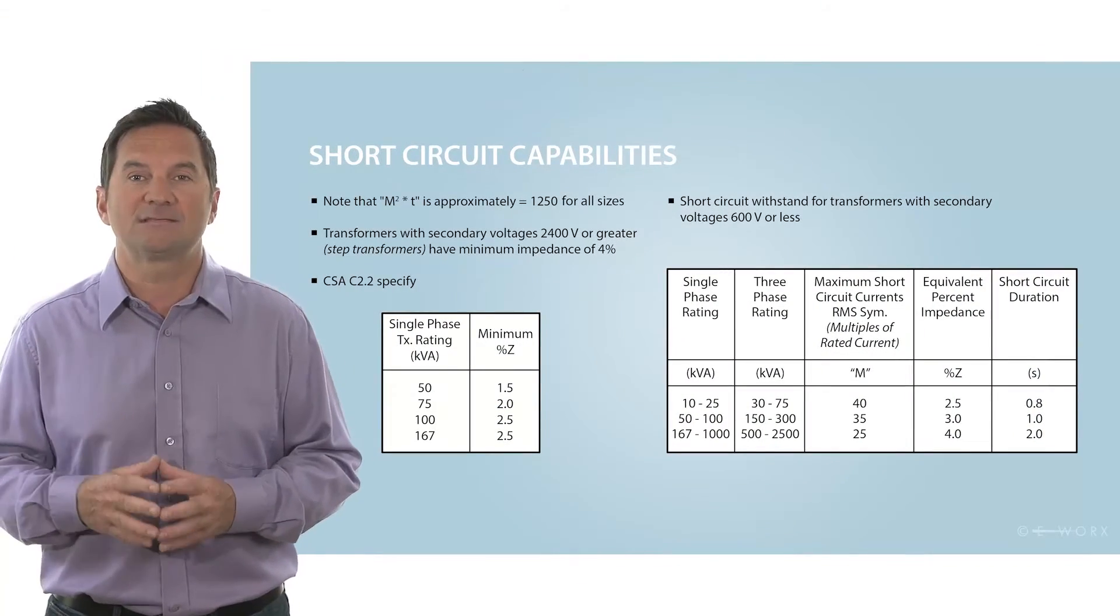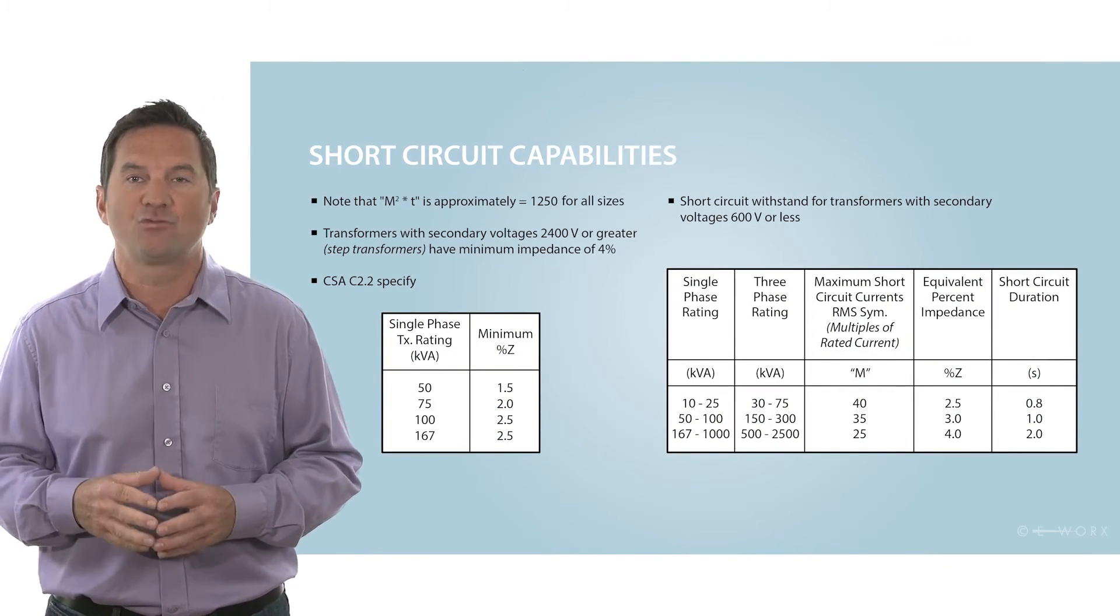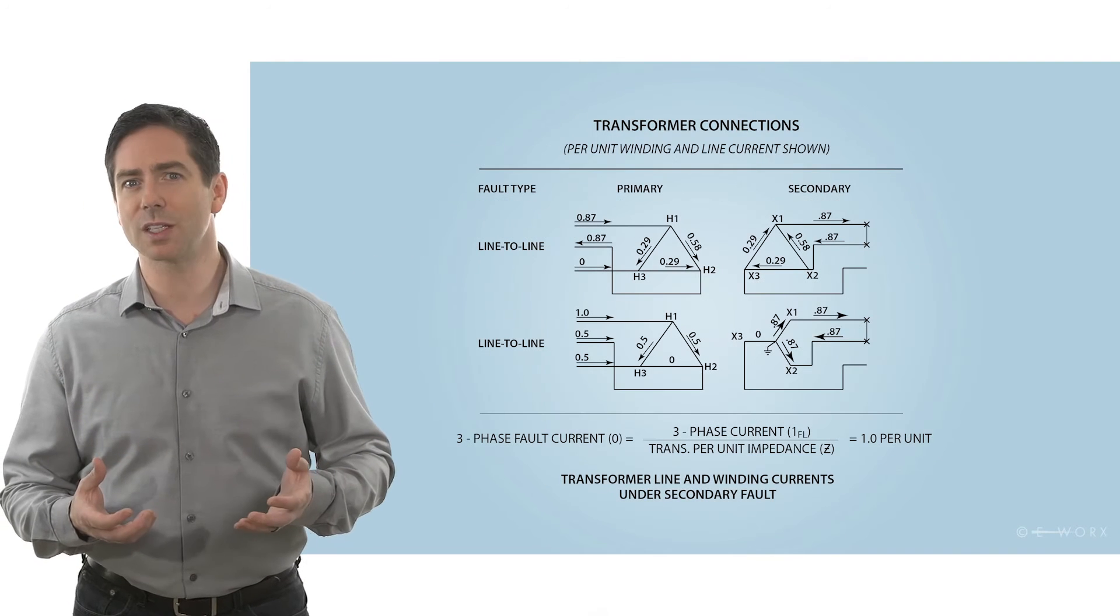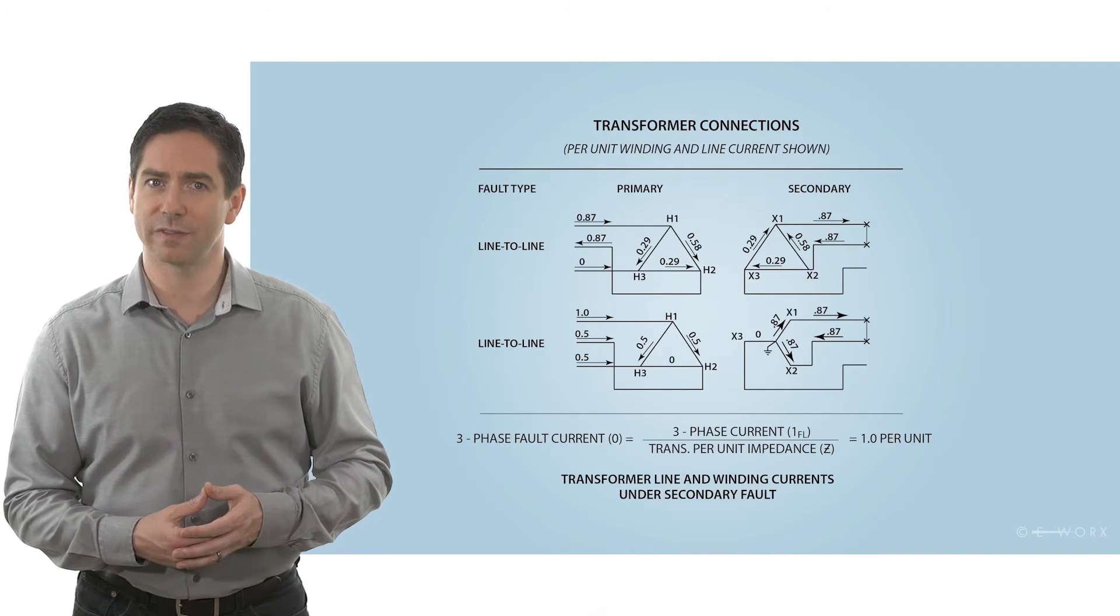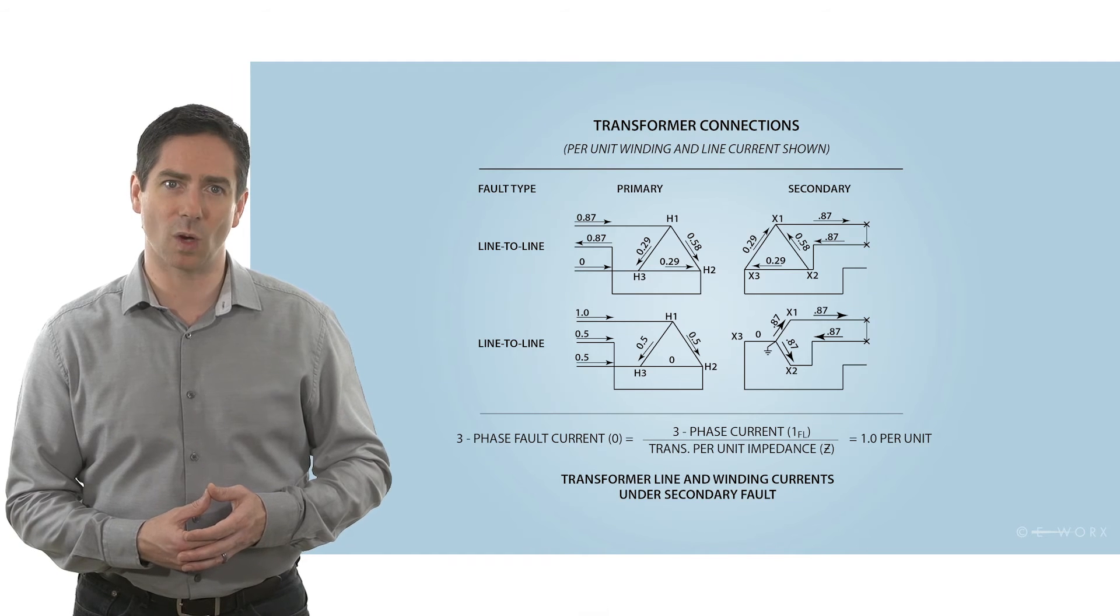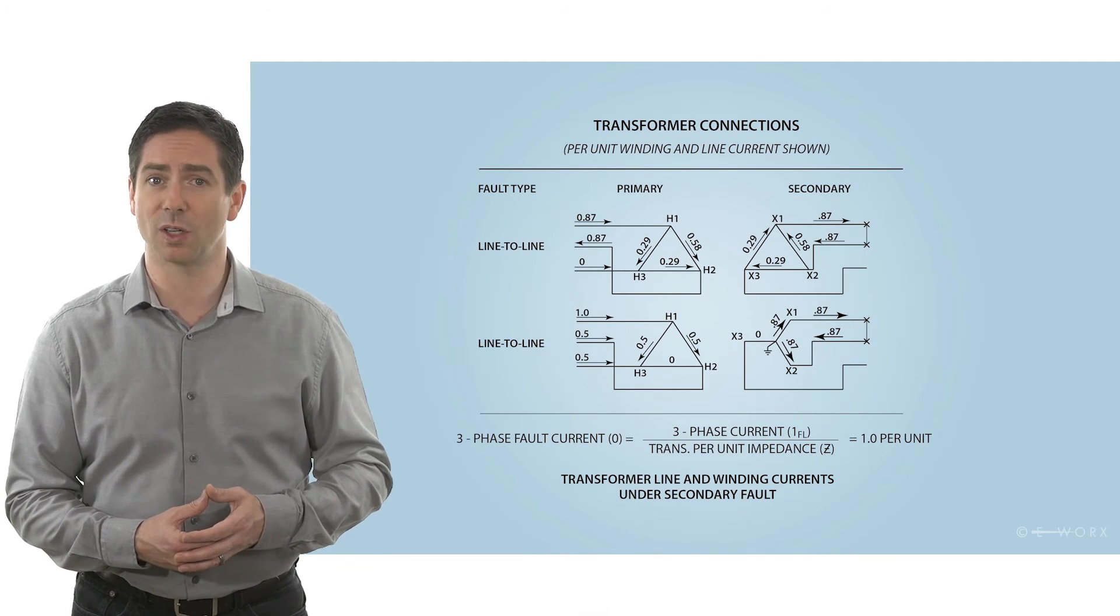A winding cannot sustain a current 40 times the transformer's rating for very long. We have to make sure the fuse will blow on a phase-to-phase fault to protect the winding that carries the same current as a three-phase fault.